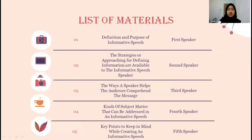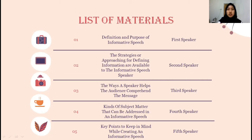Alright, this is the list of materials. The first material is about definition and purpose of informative speech. Second material is the strategies or approaches for informative speech. Third material is the ways a speaker helps the audience comprehend the speech. Fourth is kinds of subject matter that can be addressed in an informative speech. And last, key points to keep in mind while creating an informative speech.